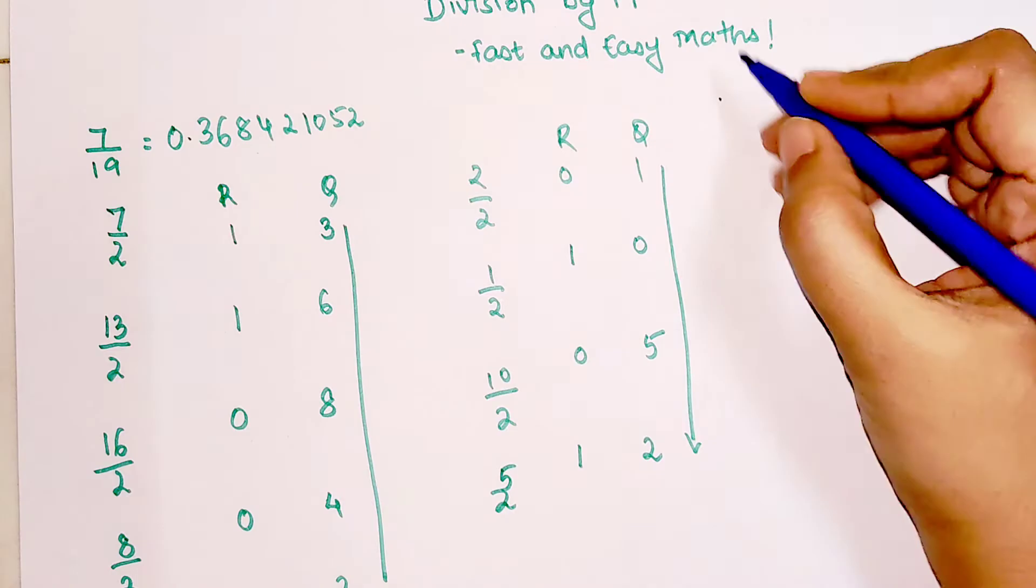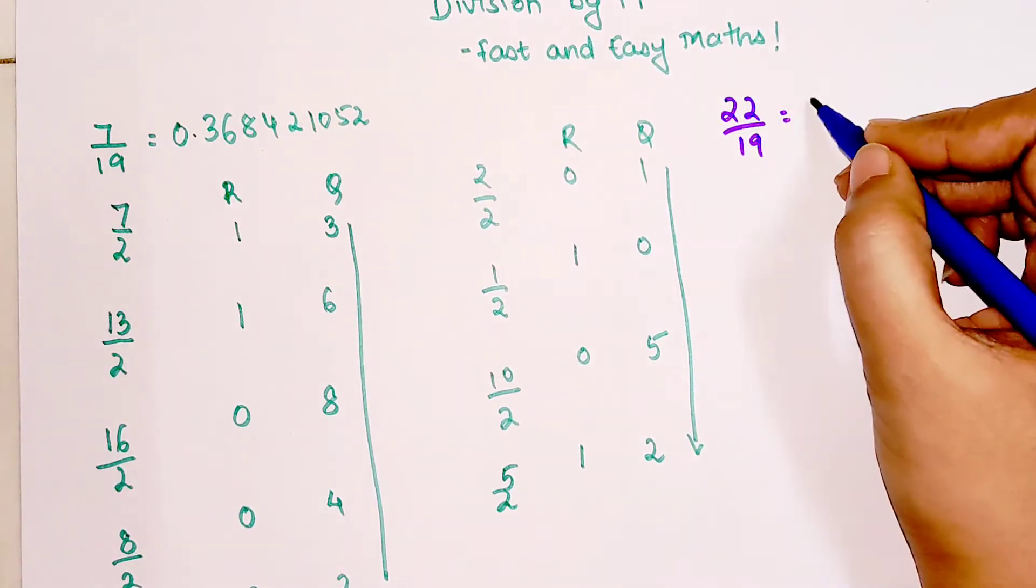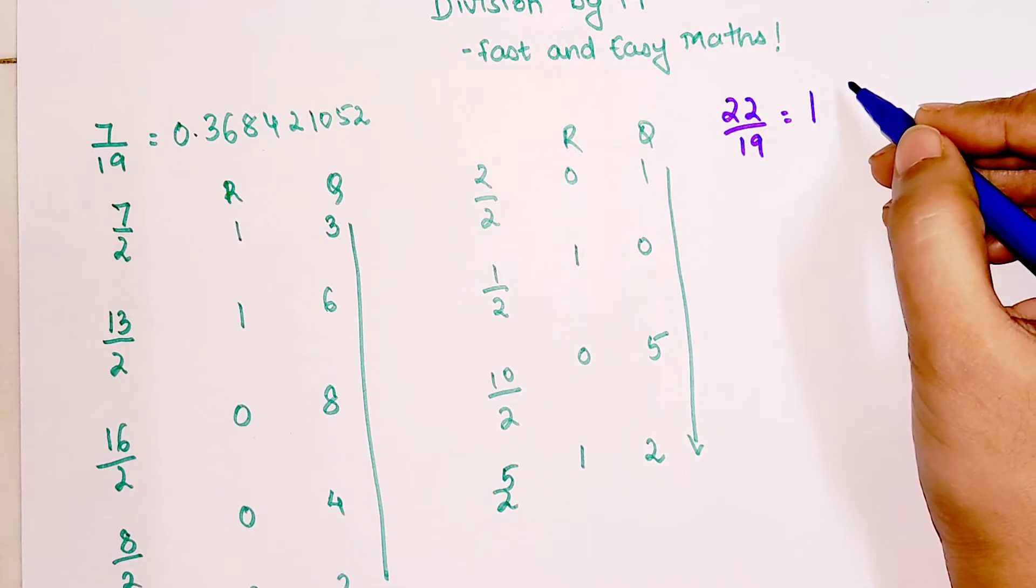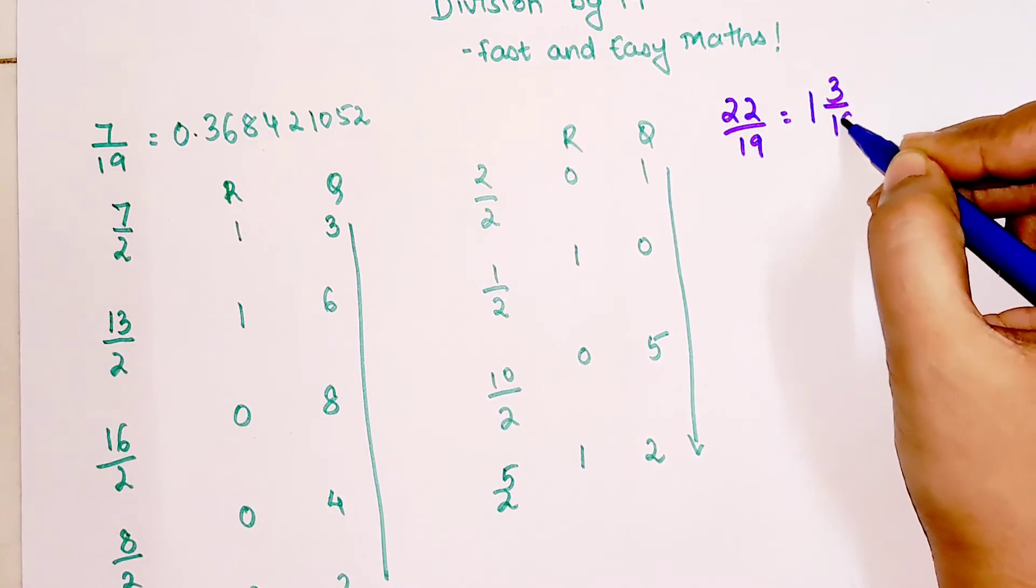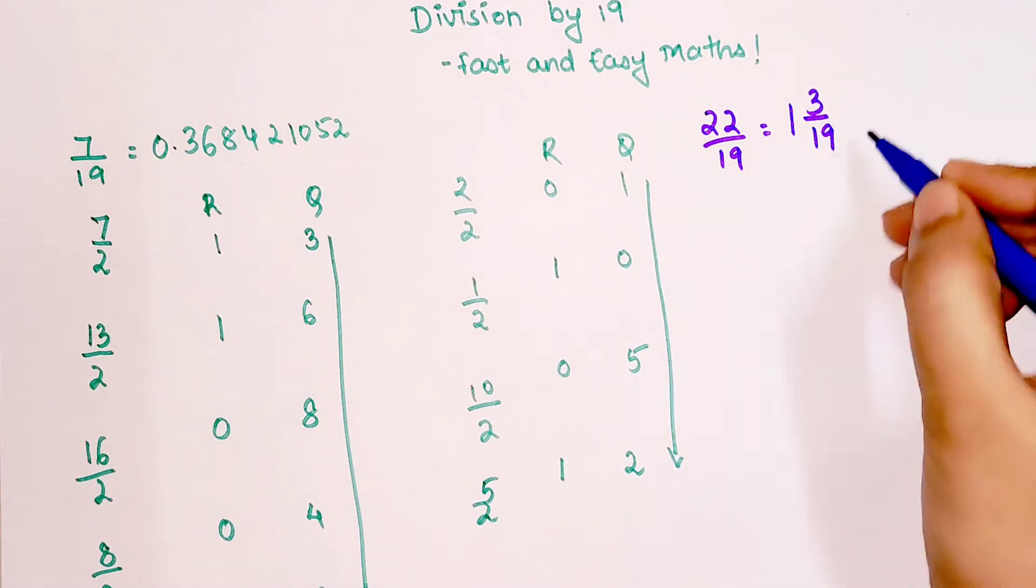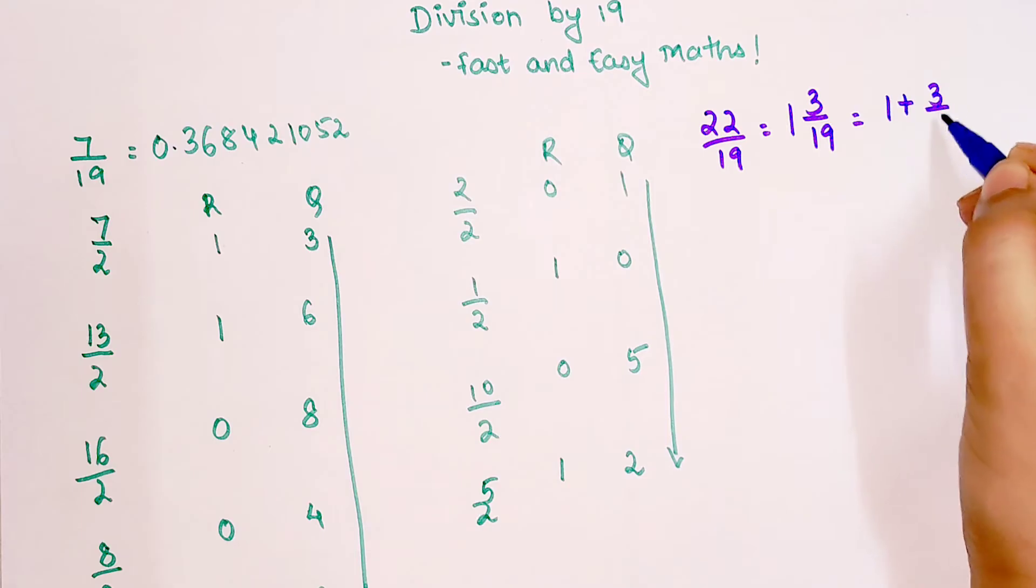Let's say we had 22 divided by 19. We know 19 ones is 19, and we can take 19 from 22, we're left with 3. So now we'll start with 3 divided by 19. This mixed form can be written as 1 plus 3 upon 19.